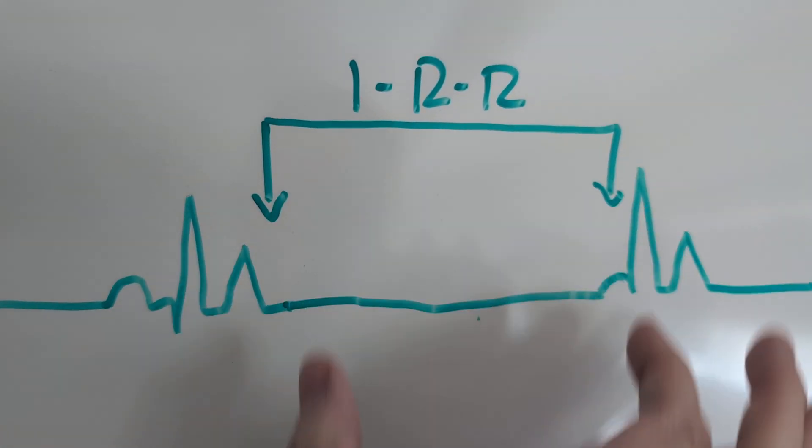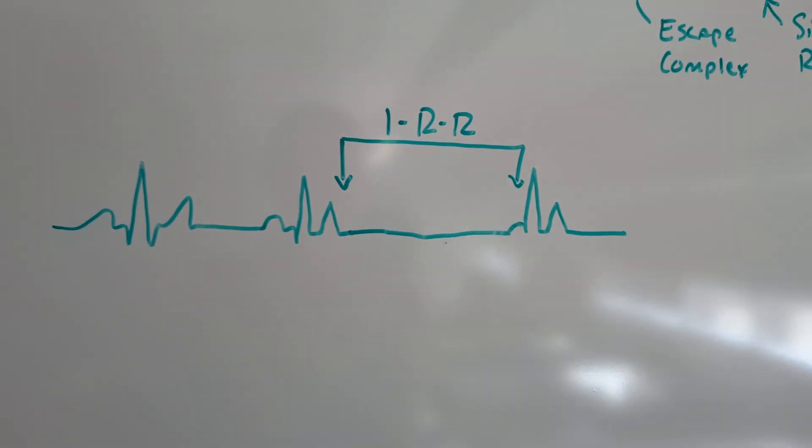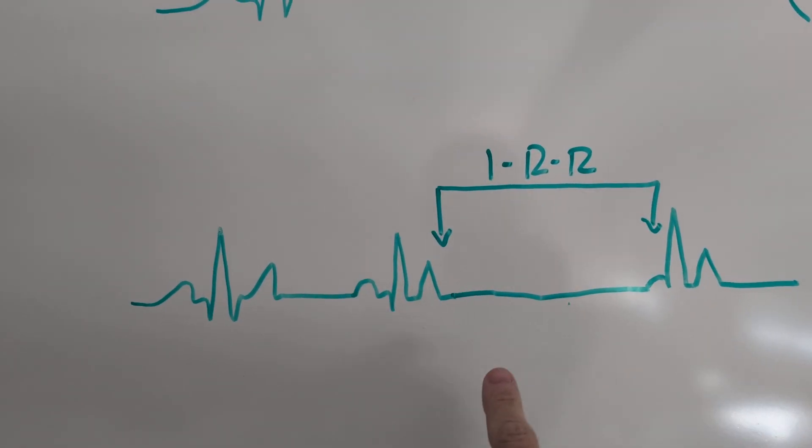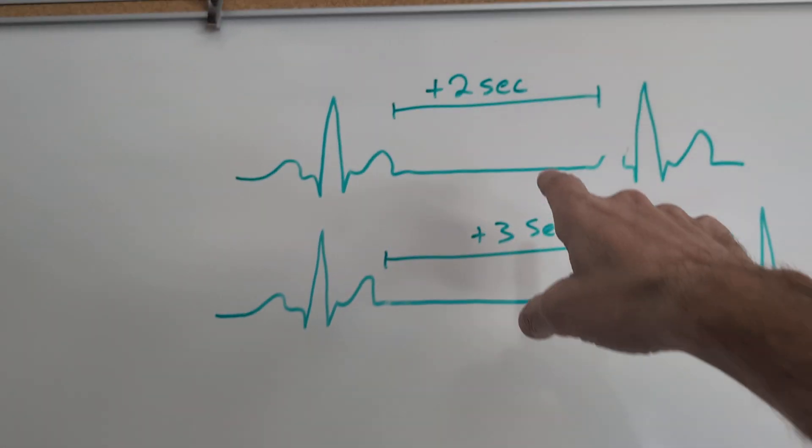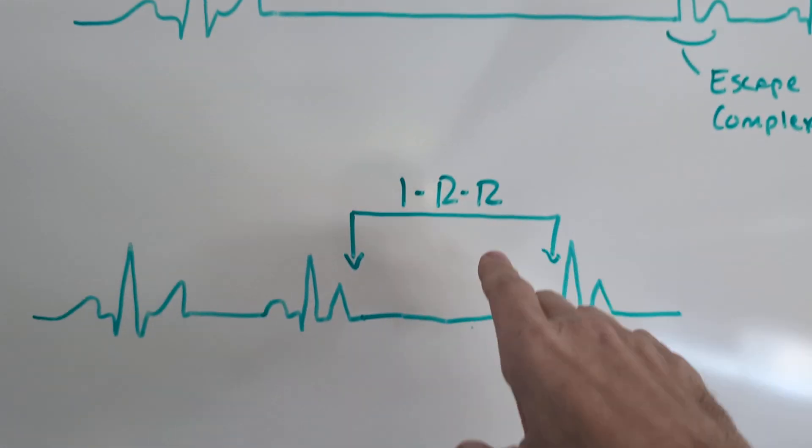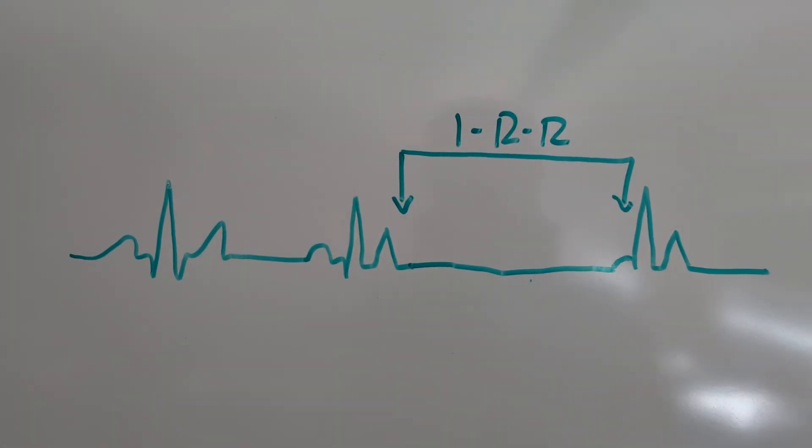So in this case, one R to R interval can fit into that pause, but it may be two or three. And so that's how you can differentiate between sinus pause, sinus arrest, and a sinus exit block.